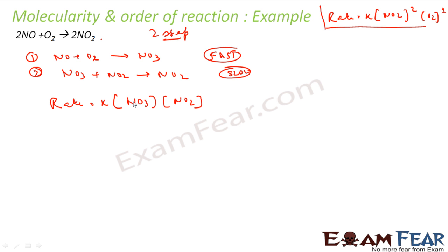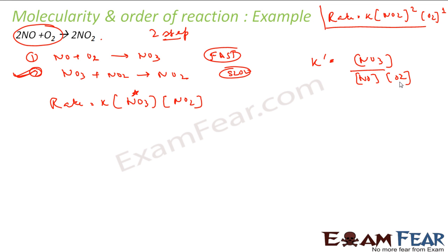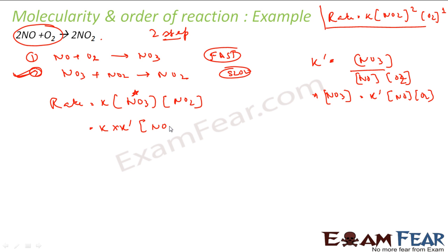But NO3 is not part of the original reactants — it is an intermediate. So what should we do? We use the first equation to find the value of [NO3]. For the first equilibrium step: K' = [NO3] / ([NO][O2]), so [NO3] = K' [NO][O2]. We substitute that into the rate expression.